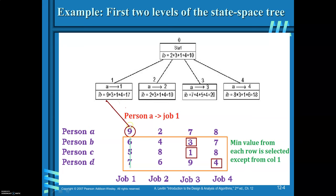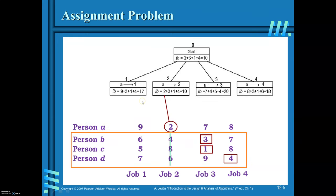When person A is fixed with job 1, strike out the first column. From the remaining 3 columns, choose the minimum value from each row for persons B, C, and D. When person A is assigned with job 2, strike out the second column. The row minimums for the remaining rows are 3, 1, and 4, giving a total lower bound of 10.